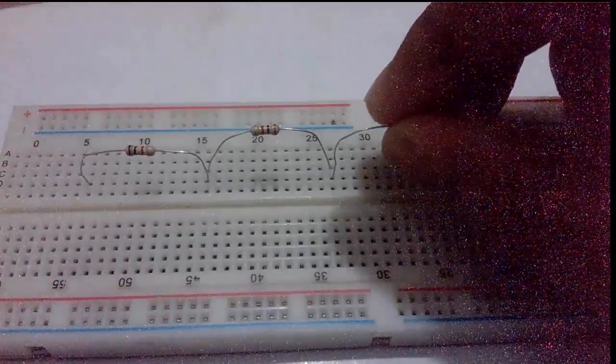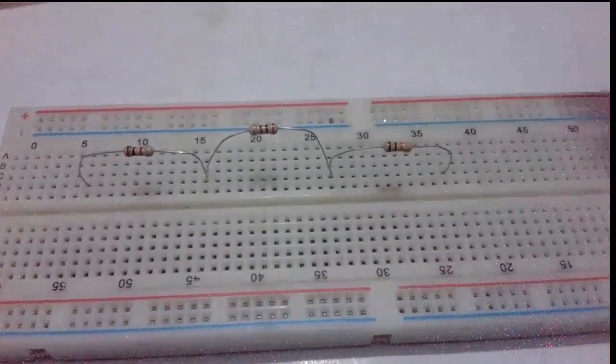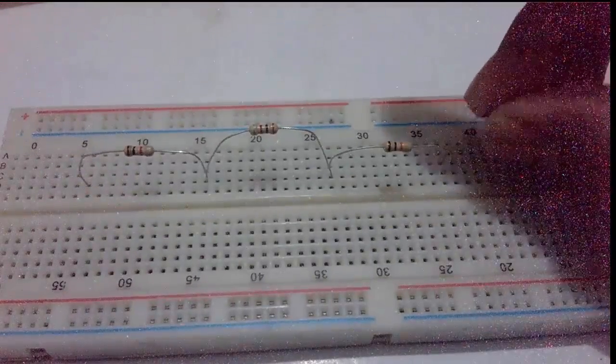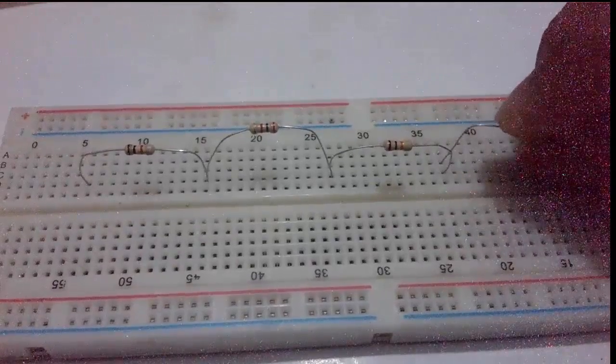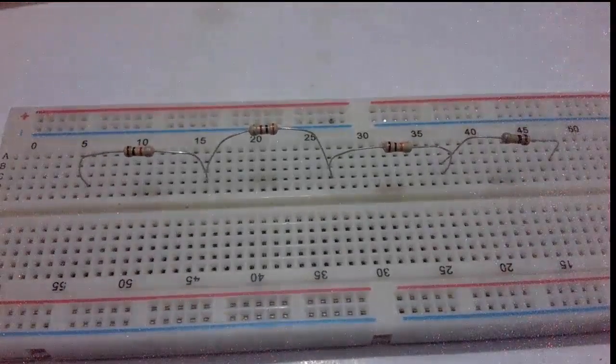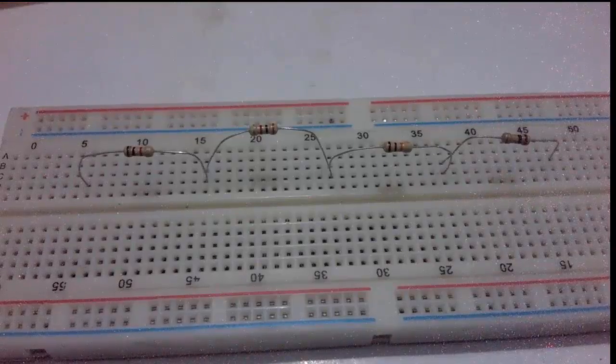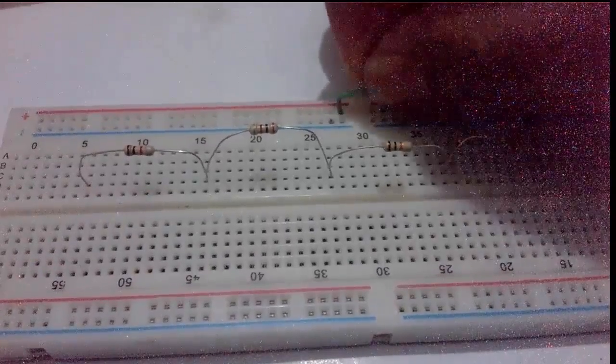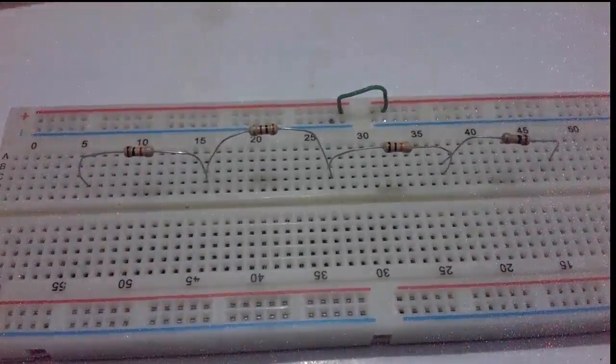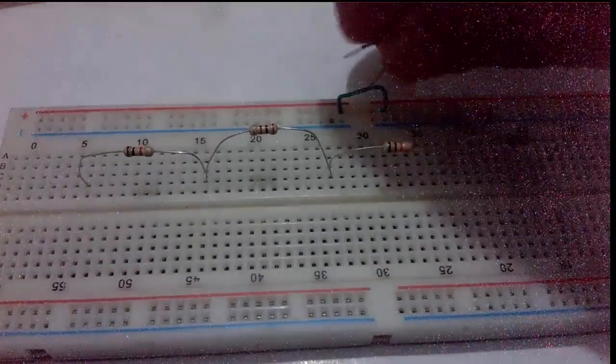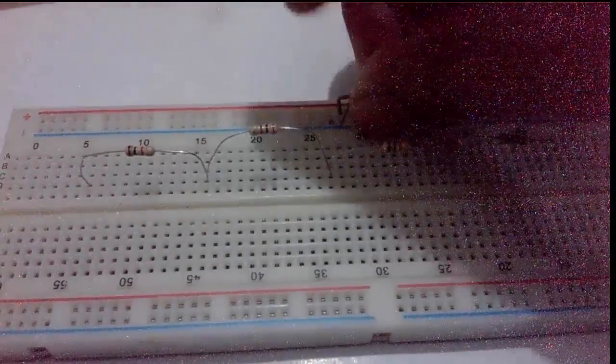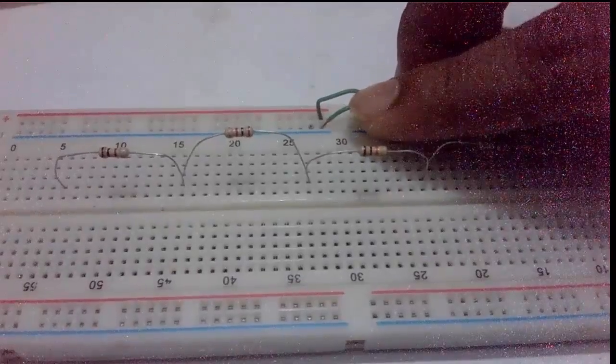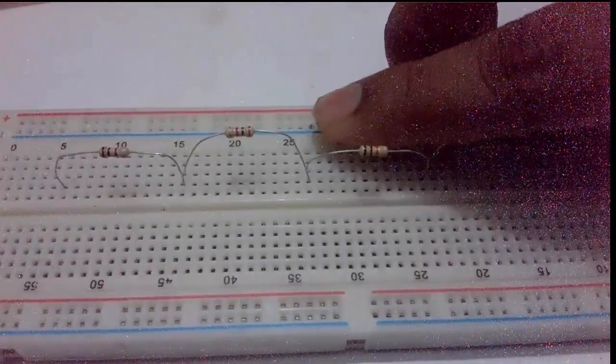So I kept all 4 resistors in series. In a series circuit, the current is the same but there is a variation of voltage across each resistor.